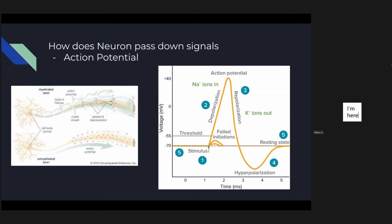Each action potential is the same, but not every sensory input is — for example, the pain of hitting yourself with a brick is different from getting hit by a car. That difference is represented by the frequency of action potential firing rather than the strength. One interesting thing to mention is that to make signal conduction more efficient, there are little sheets of glial cell called myelin on the axon. Myelin acts as insulation — like the rubber tape on a wire — keeping what's inside inside and what's outside outside, allowing the impulse to be passed down more efficiently.